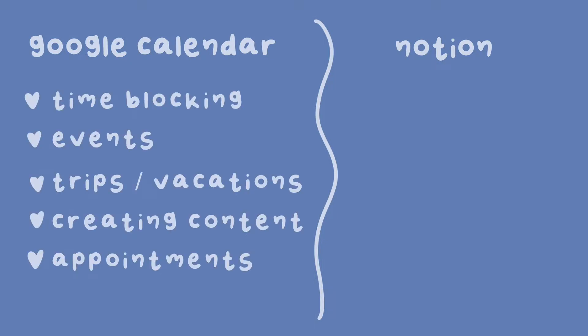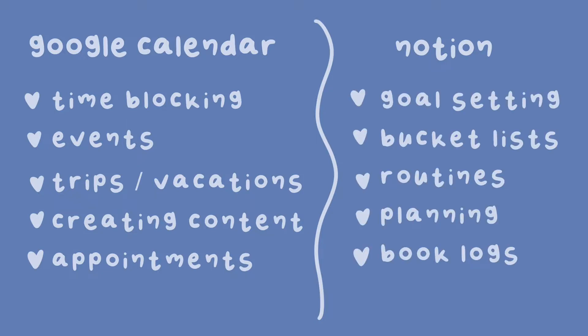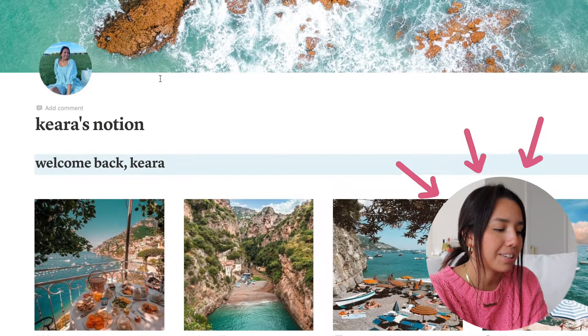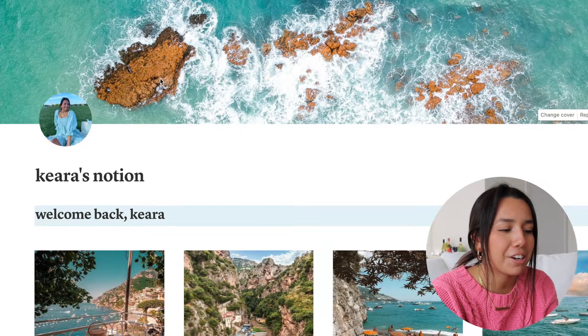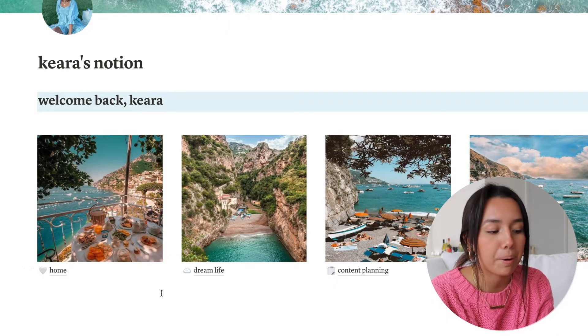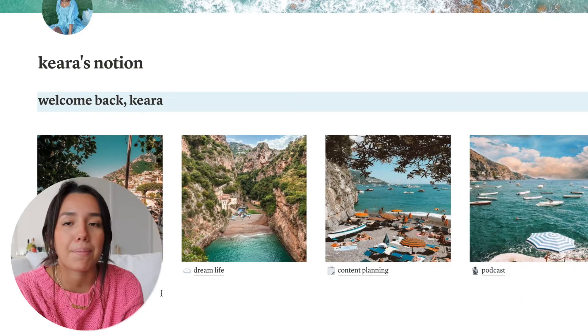I also use Notion, but there's a key difference between what I put on Google Calendar and what I put in Notion. My Google Calendar is more for time blocking, events, deadlines, and recording and creating content. My Notion is more fun and visually aesthetic — I use it more for planning, goal setting, travel itineraries, and planning out my content. This is what my Notion looks like; I gave it a revamp not too long ago. I have four different boxes: Home, Dream Life, Content Planning, and Podcast.